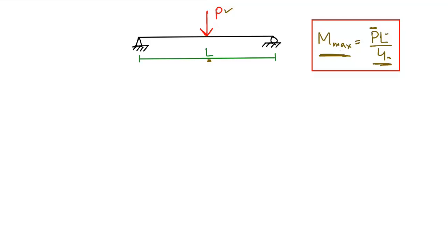The maximum bending moment of the beam depends on many things. For example, it depends on the type of load — either it is a pointed load or a concentrated load. It also depends on the support condition, for example either a simple hinge support or roller support, or also a fixed support which is mostly in cantilever beams or fixed beams. It also depends on the length of the beam.